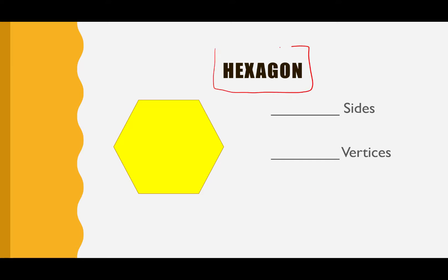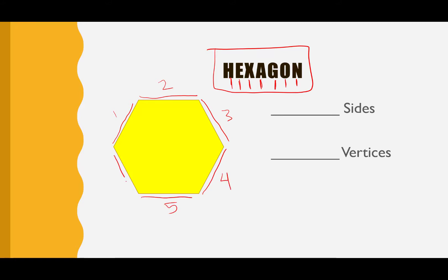Our next shape is called a hexagon. You try to say that: hexagon. Let's spell it: H, E, X, A, G, O, N. Hexagon. Very good. Let's count our sides on our hexagon: one, two, three, four, five, six — our hexagon has six sides. Let's see how many vertices it has: one, two, three, four, five, and six. Our hexagon has six sides and six vertices. Try to think if there's anything you've ever seen that looks like a hexagon.